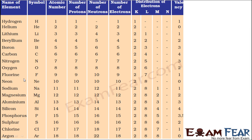Looking at valency element by element: Hydrogen's outermost shell has 1 electron; it either needs or can give 1 electron, so valency is 1. Helium's outermost shell has 2 electrons; the K shell can hold a maximum of 2, so it is stable and valency is 0. Lithium's outermost shell has 1 electron; the L shell can hold up to 8, so it either needs 7 more or can give 1. Since nobody gives 7 electrons, it loses 1 and has valency 1.